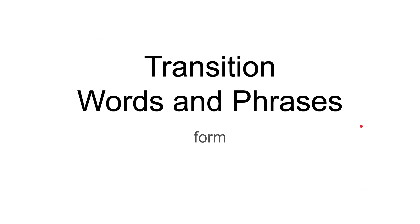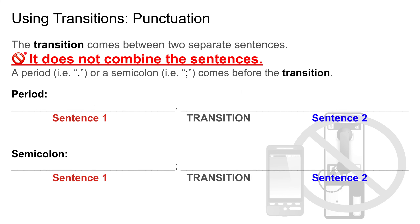Let's move on and look at the form of transition words and phrases. Very important: the transition comes between two separate sentences. It does not — let me say this again — it does not combine the sentences. Acceptable punctuation that can come before the transition is a period or a semicolon.